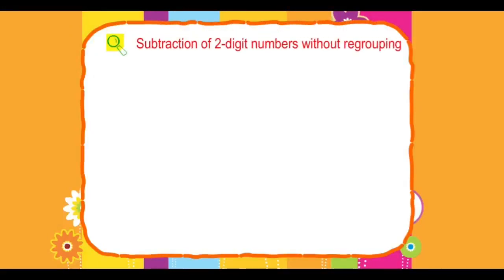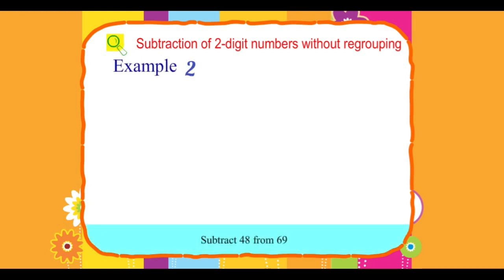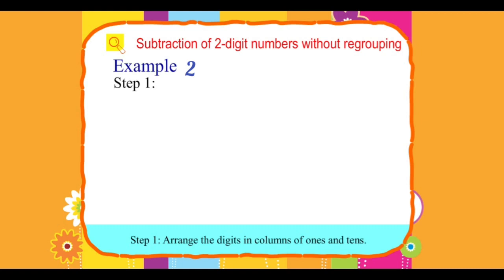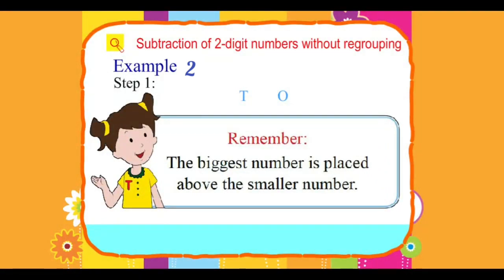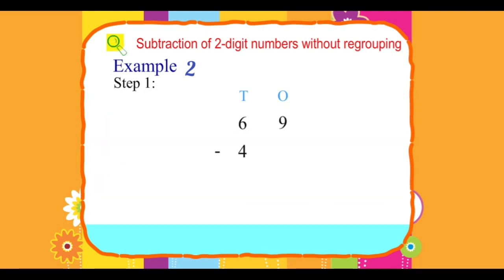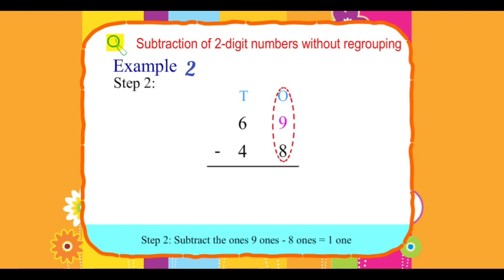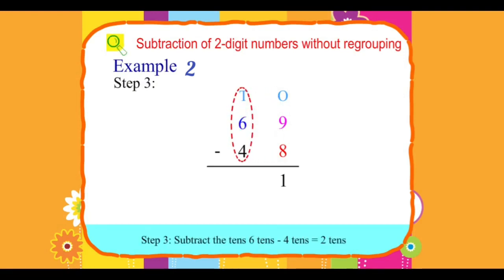Subtracting a two-digit number from a two-digit number without regrouping. Example: subtract 48 from 69. Step 1: Arrange the digits in columns of ones and tens. Remember, the biggest number is placed above the smaller number. 69 minus 48. Step 2: Subtract the ones — 9 ones minus 8 ones equals 1 one. Step 3: Subtract the tens — 6 tens minus 4 tens equals 2 tens. So 69 minus 48 is equal to 21.